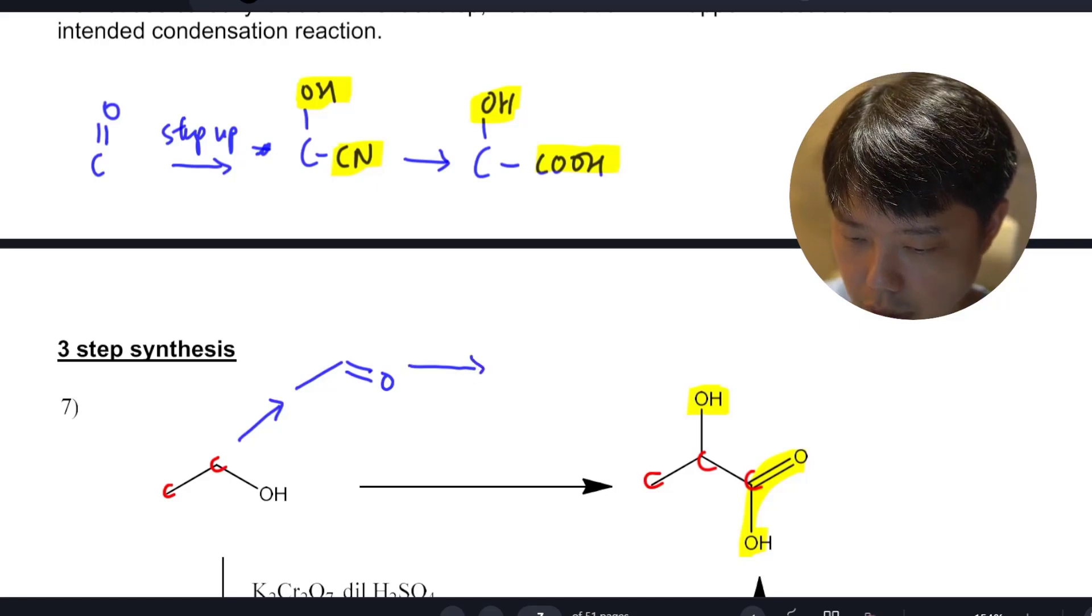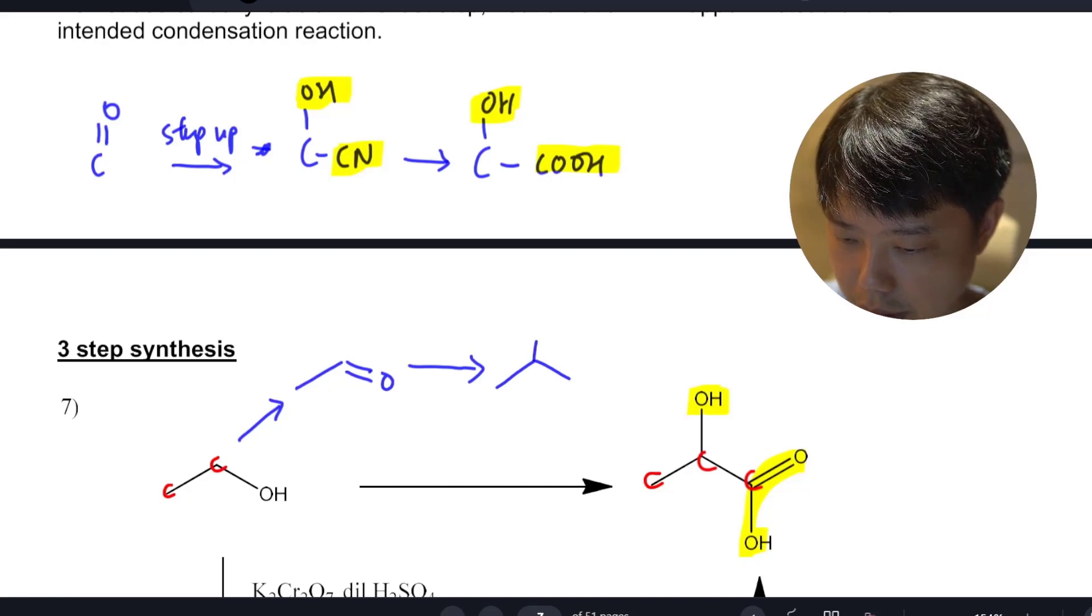Once you do that, you add your HCN. You will get the CN here. This guy will become OH.